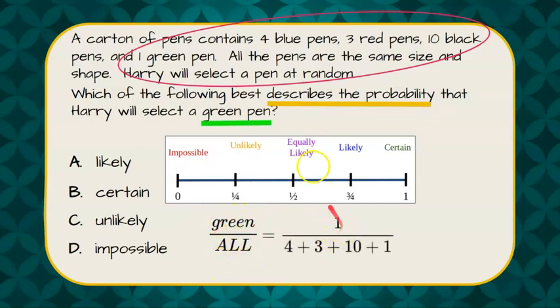So we want to know that there is one green pen in the box, four blue, three red, ten black, and one green. So we add up all four colors together, and we get one out of eighteen.